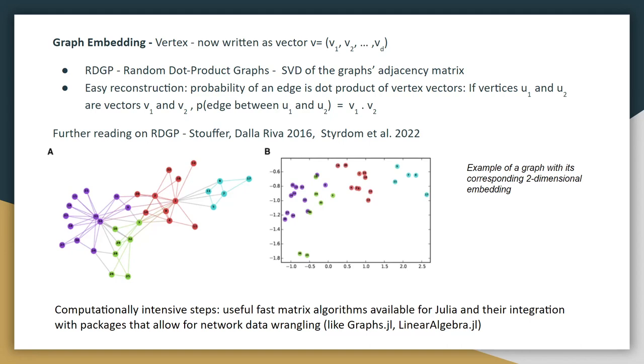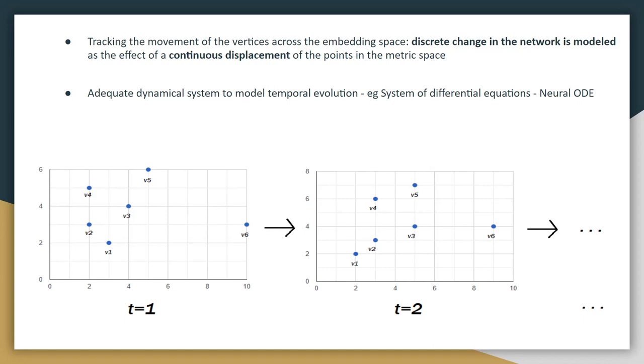If you're more interested in further reading on RDGP, I've listed a couple of papers. These are papers that work on problems such as food web ecological networks and thus make use of this particular type of embedding and describe it in more detail. Now these are computationally intensive steps that are required here. So we make use of LinearAlgebra.jl having useful fast matrix algorithms available, and also the Graphs.jl package that allows us to do all the network data wrangling that you need to do. These are two very highly useful packages that we used.